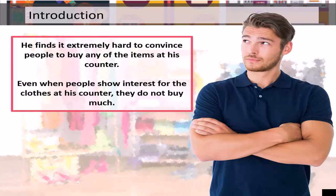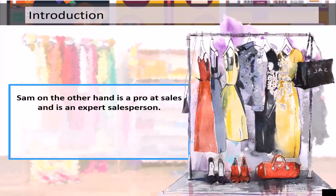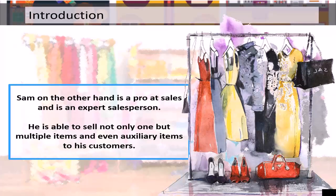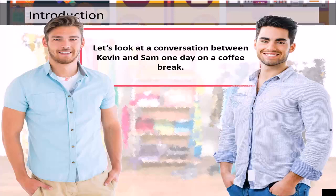Even when people show interest in the clothes at his counter, they don't buy much. Sam, on the other hand, is a pro at sales and is able to sell not only one but multiple items and even auxiliary items to his customers. Let's look at a conversation between Kevin and Sam one day on a coffee break.